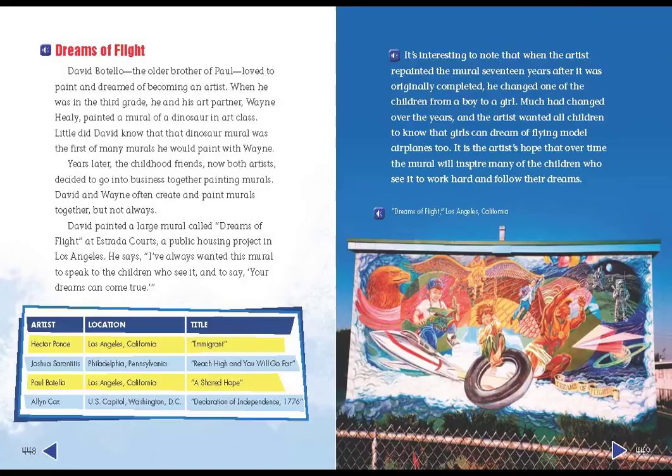David painted a large mural called Dreams of Flight at Estrada Courts, a public housing project in Los Angeles. It's interesting to note that when the artist repainted the mural 17 years after it was originally completed, he changed one of the children from a boy to a girl. Much had changed over the years, and the artist wanted all children to know that girls can dream of flying model airplanes, too. It is the artist's hope that, over time, the mural will inspire many of the children who see it to work hard and follow their dreams.